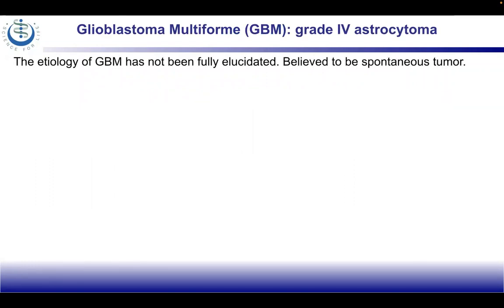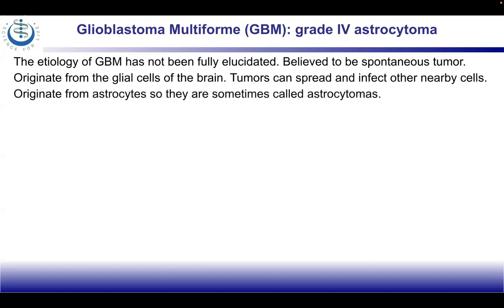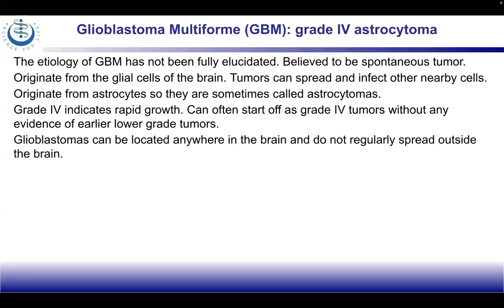Moving to GBM as a type 4 astrocytoma: the etiology of GBM has not been fully elucidated. It is believed to be a spontaneous tumor originating from glial cells of the brain, spreading to infect nearby cells. They originate from astrocytes and are sometimes called astrocytomas. Grade 4 indicates rapid growth and can often start as a grade 4 tumor without evidence of lower-grade precursors. GBMs can be located anywhere in the brain and do not regularly spread outside the brain.